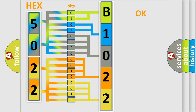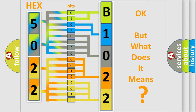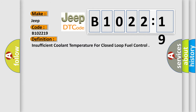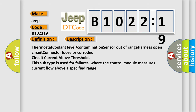We now know in what way the diagnostic tool translates the received information into a more comprehensible format. The number itself does not make sense to us if we cannot assign information about what it actually expresses. So what does the diagnostic trouble code B1002219 interpret specifically for Jeep vehicles? The basic definition is: insufficient coolant temperature for closed loop fuel control. A short description of this DTC code includes: thermostat, coolant level, contamination, sensor out of range, harness open circuit, connector loose or corroded, circuit current above threshold.